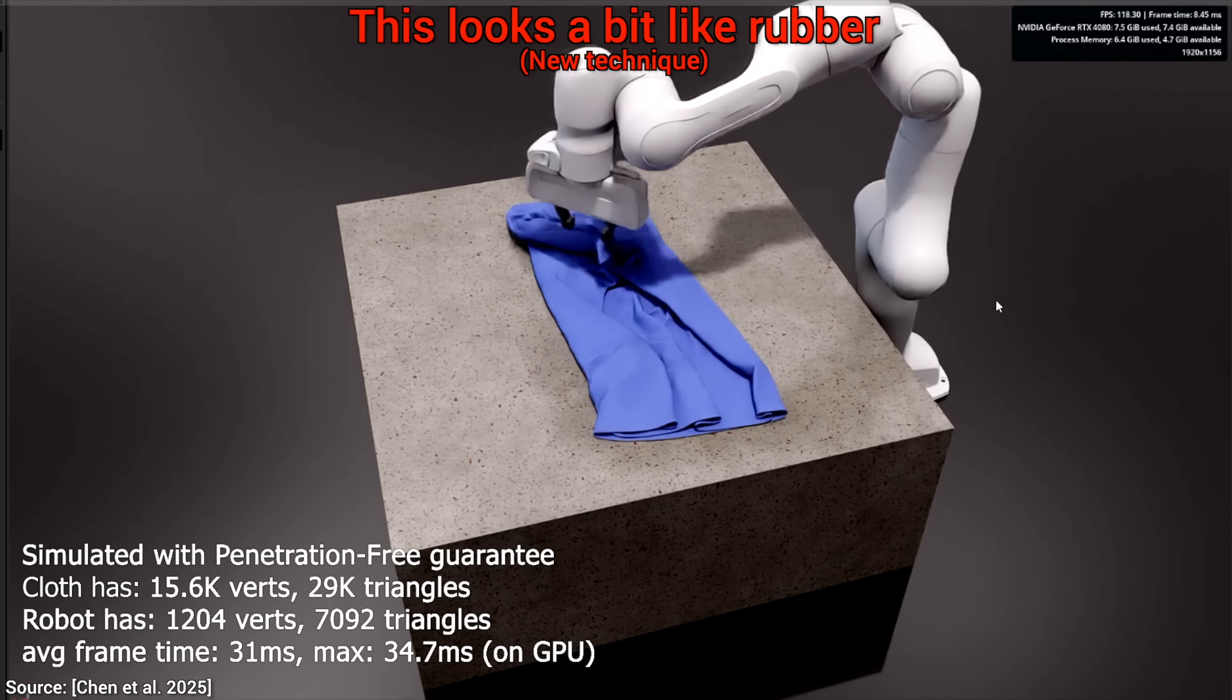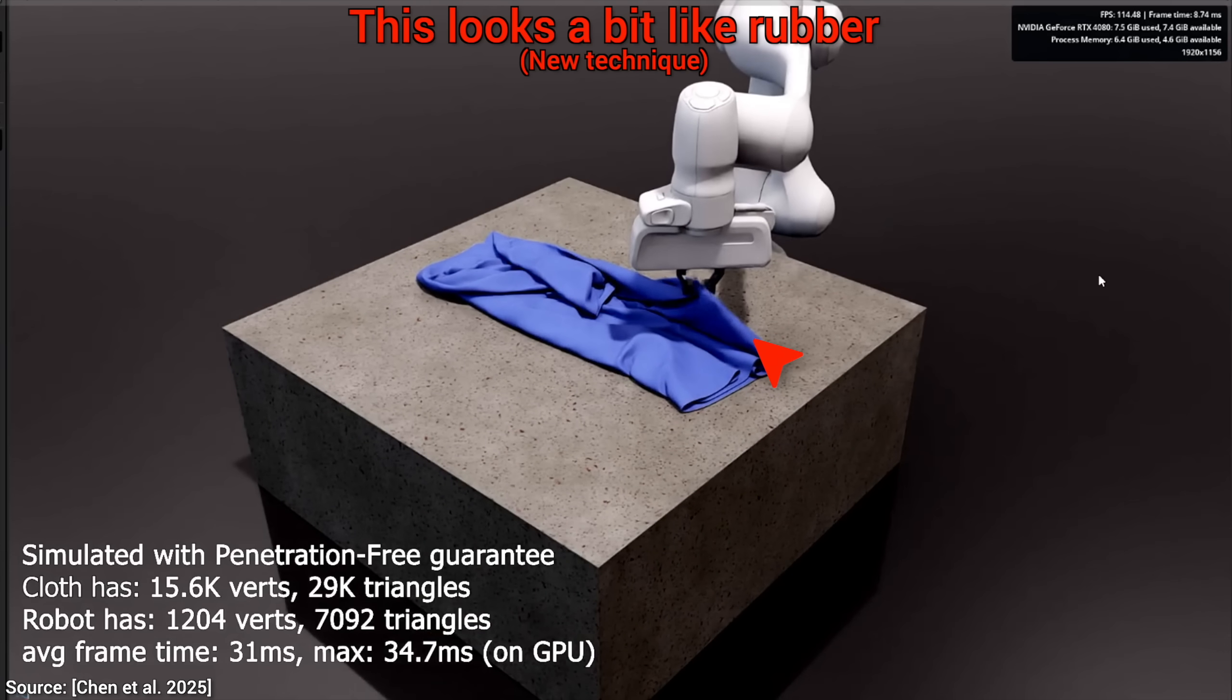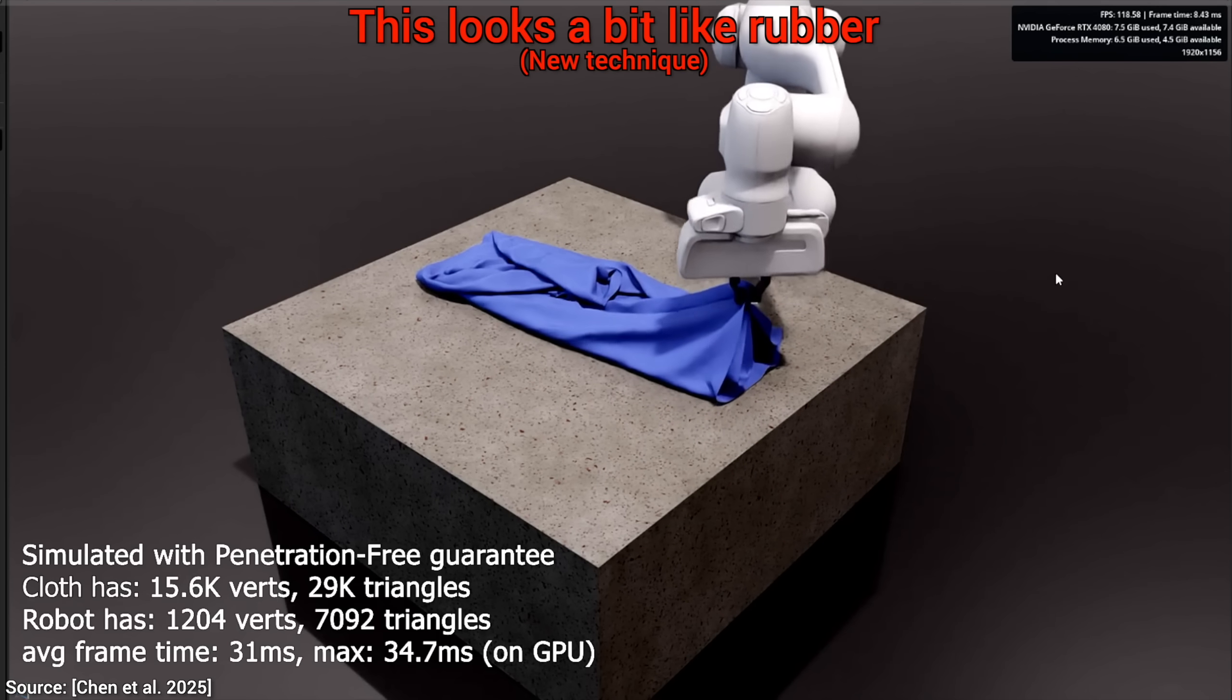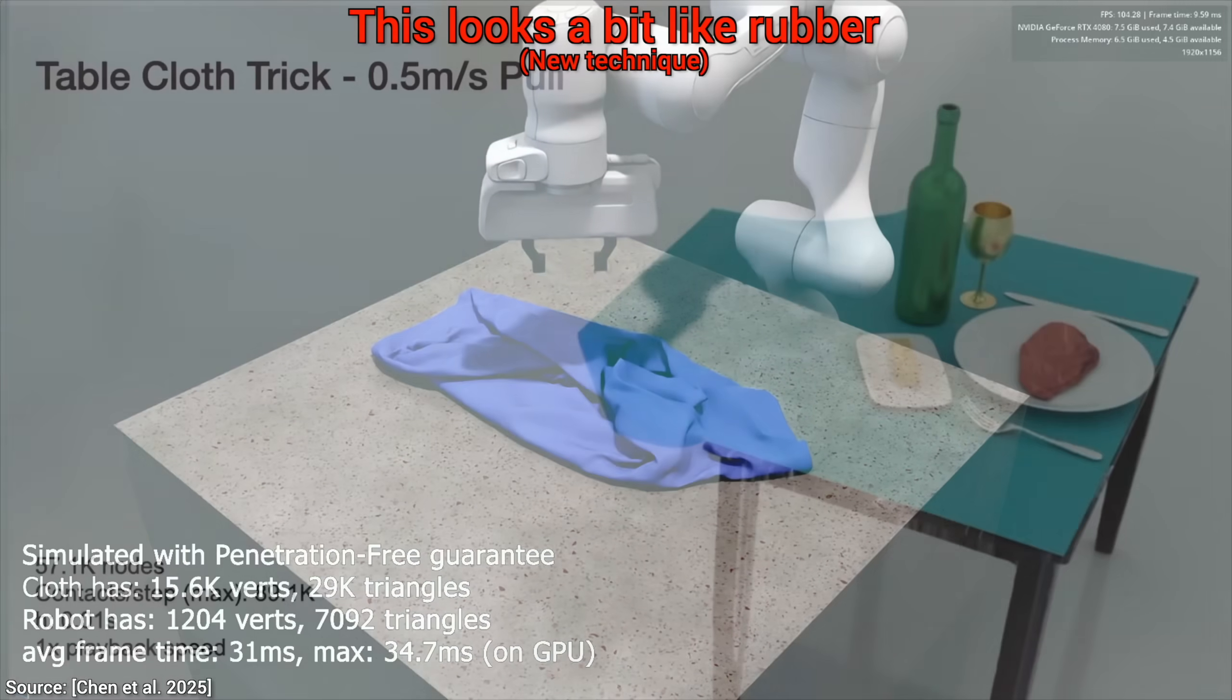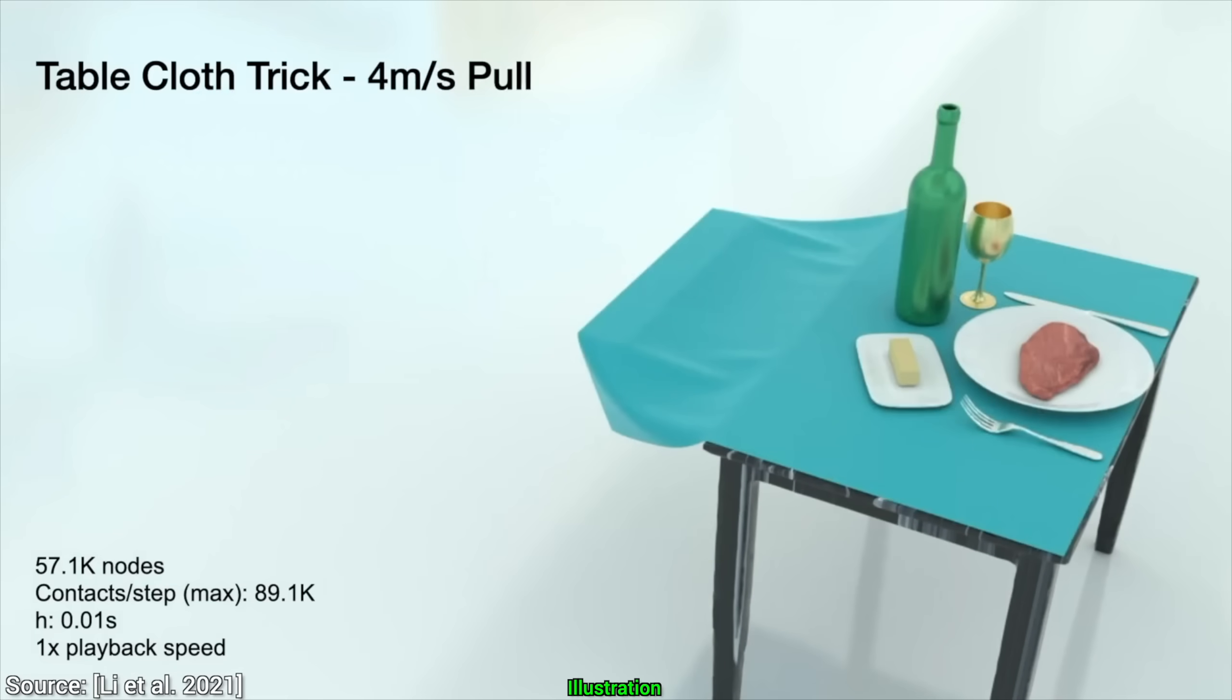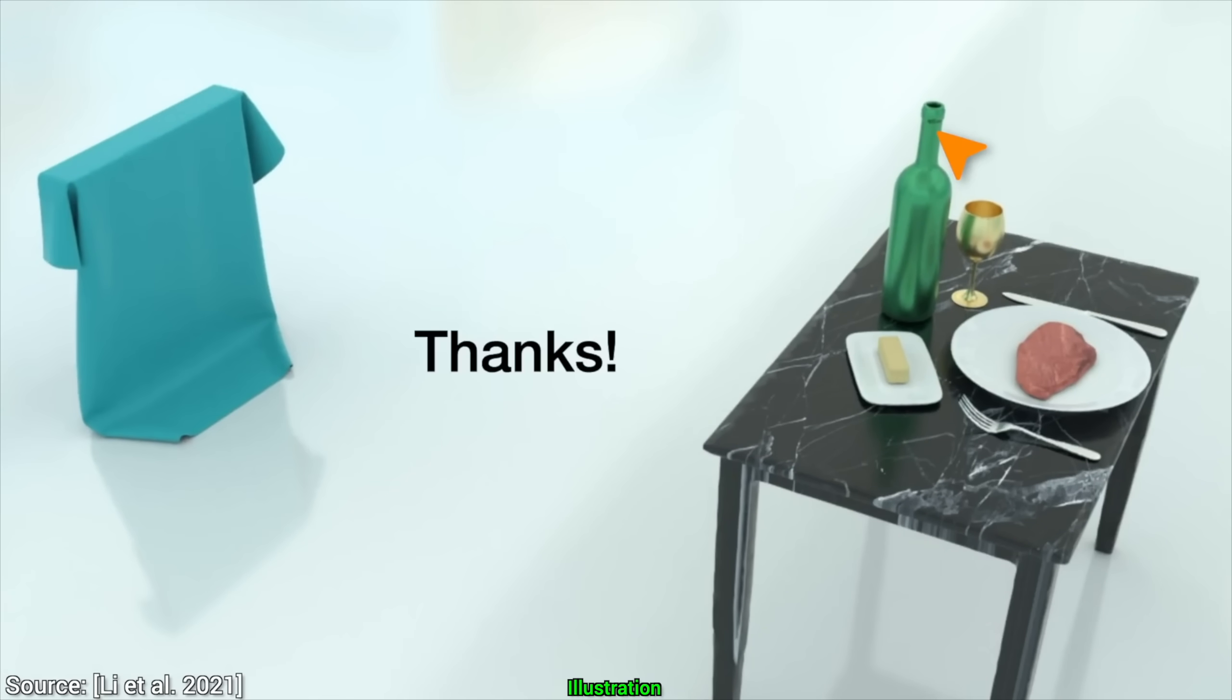Now, not even this technique is perfect. For me, some of these simulations with clothing feel a bit too rubbery. The authors themselves point out that the contact forces aren't always perfect. It's a bit like walking on a floor that has tiny, invisible speed bumps. It's a similar idea. Also, in some very specific cases, with few collisions, but very high speeds, this method can actually be slower than the old techniques. So, still not perfect. But an incredible step forward.